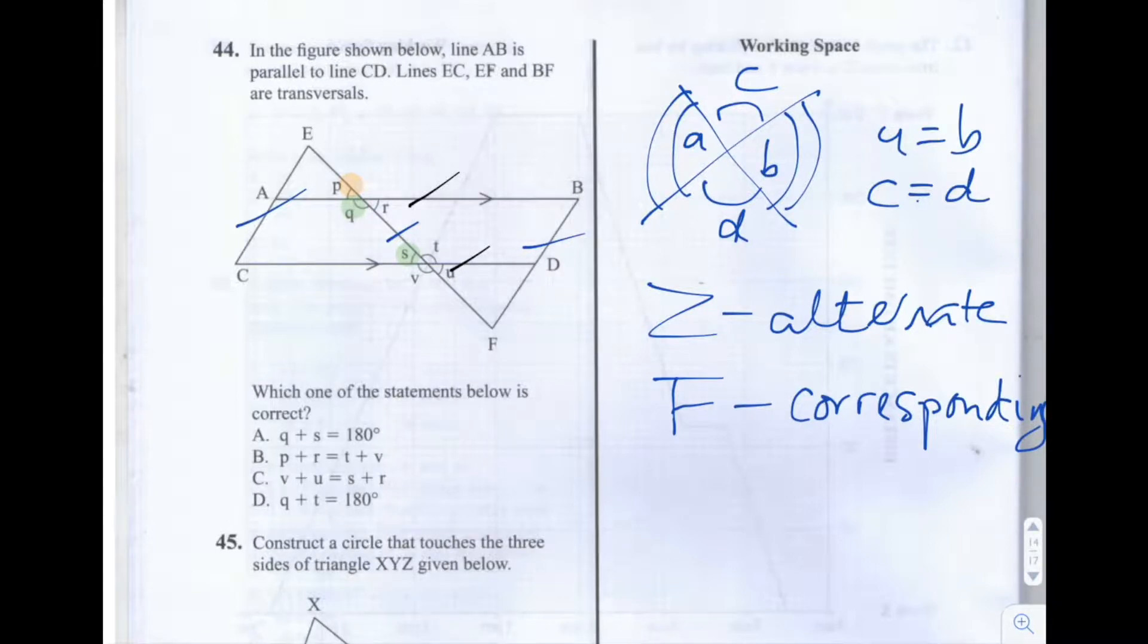So if we can fit any angles that fit these rules, we'd know that they're equivalent. So if P and S fit any of these rules, we know that P and S are equivalent. And since P and Q lie on the same line, we know that they sum up to 180. So if we can find an argument that says that P is equal to S, we know that Q and S is equal to 180.